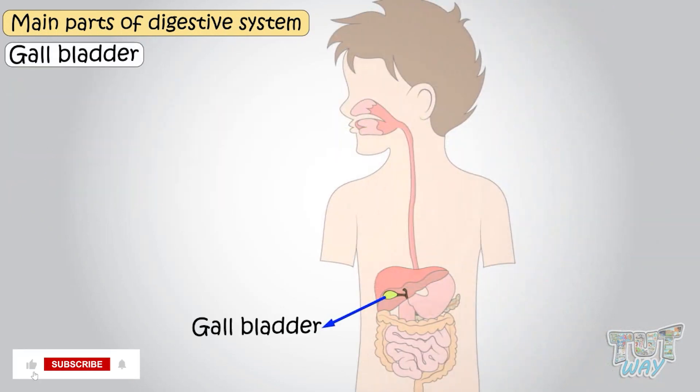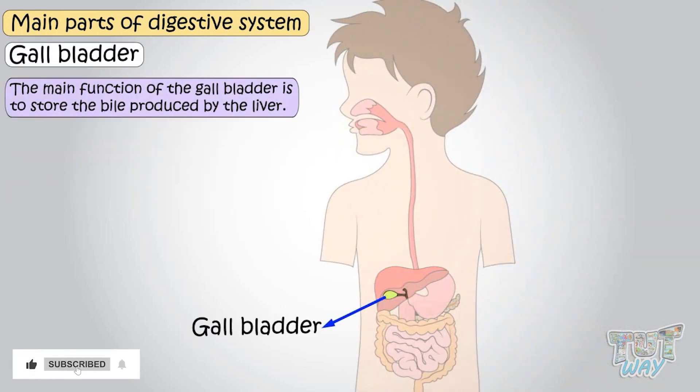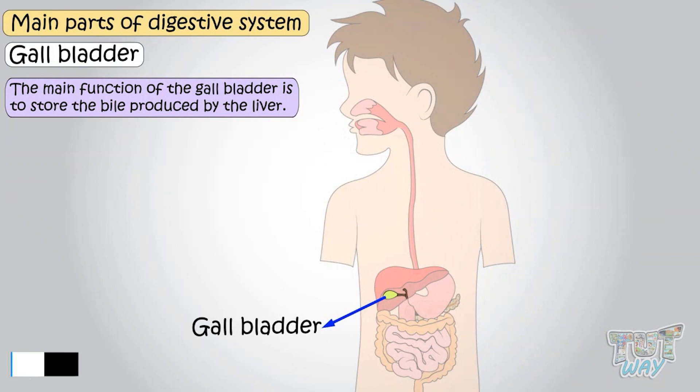Gallbladder — the main function of the gallbladder is to store the bile from the liver.